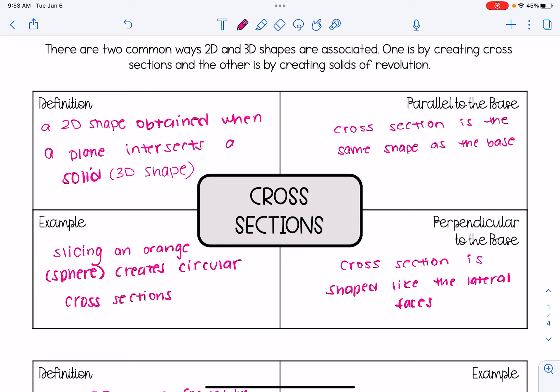It helps to think about a real-life example of cross-sections. Imagine that you have an orange, which is shaped like a sphere. When you start slicing it, you're going to get circular slices. Those are the cross-sections. So the cross-section of a sphere, when you slice it from top to bottom right through the middle, is a circle.